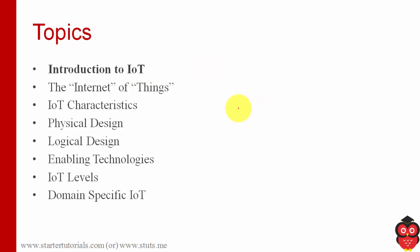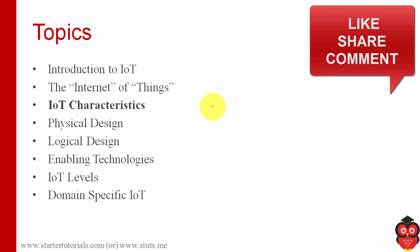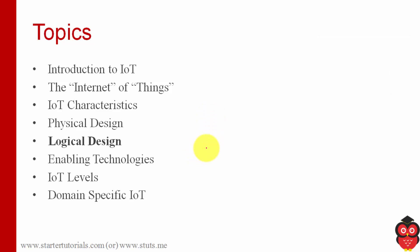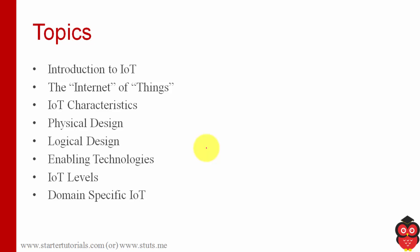First we will look at some introduction to IoT, then we will see the definition for Internet of Things, then we will look at IoT characteristics, followed by physical design of IoT, logical design of IoT. Then we will look at different enabling technologies for IoT, then IoT levels, and finally we will close this module with domain-specific IoT — related to IoT applications in various domains.